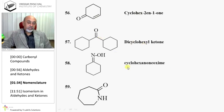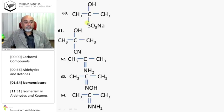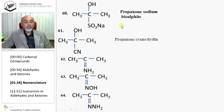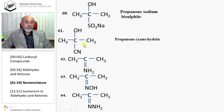Dicyclohexylketone. Cyclohexanone oxime. This is caprolactam — it is a 7-membered ring. This is acetone sodium bisulfite, or propanone sodium bisulfite. This is propanone cyanohydrin.